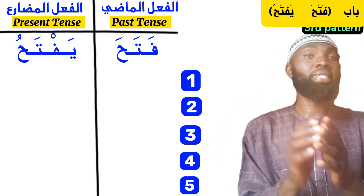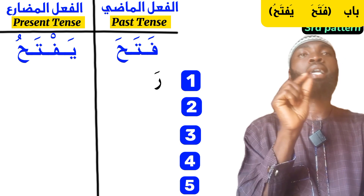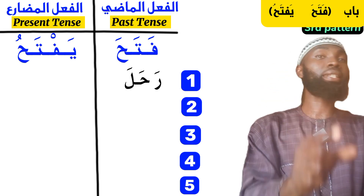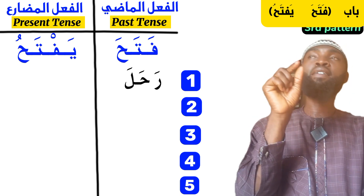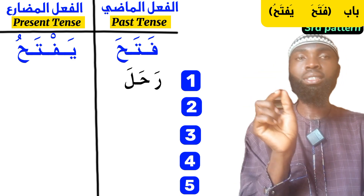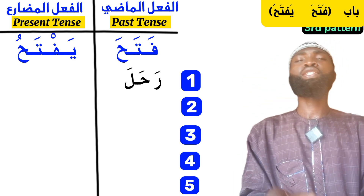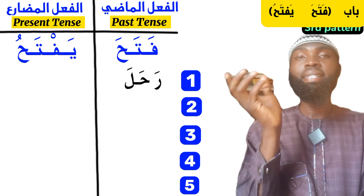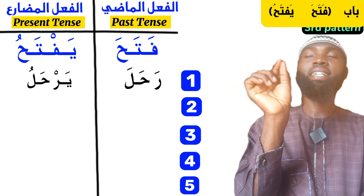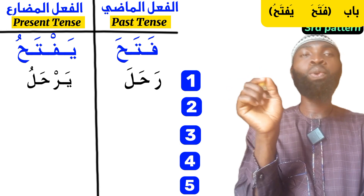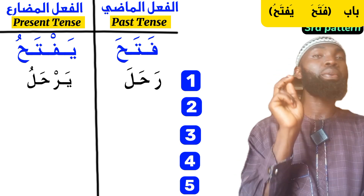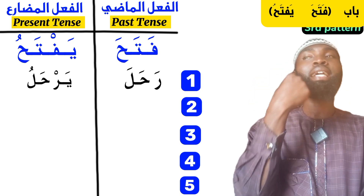The first example we have today is the word rohala. Rohala — it sounds the same pattern as fatah. Fatah means 'he opened,' and yaftahu means 'he is opening.' So rohala means 'he traveled, he journeyed, he went on a journey.' The present tense is yarohalu. The second letter, which is the ha, maintains the fatah, unlike the two previous patterns. Rohala — yarohalu. He traveled; he is traveling.